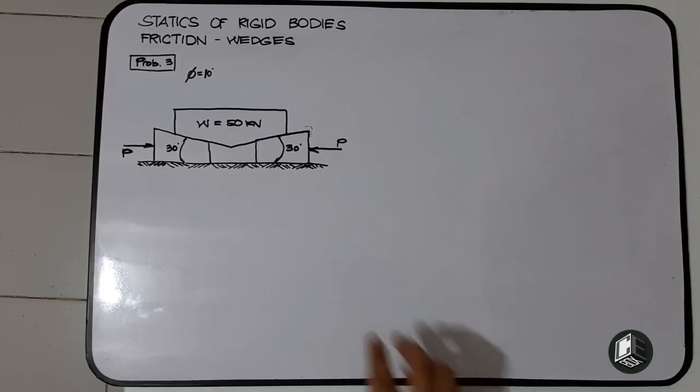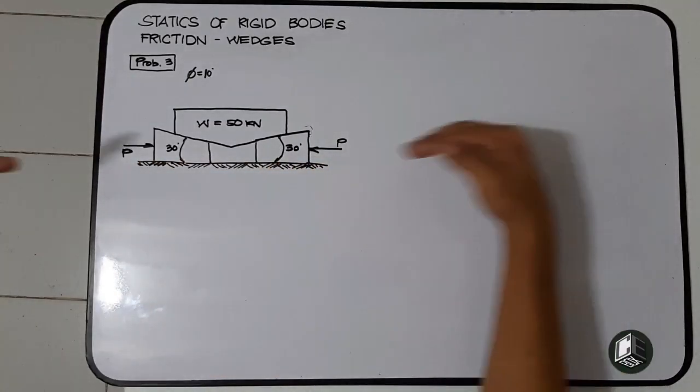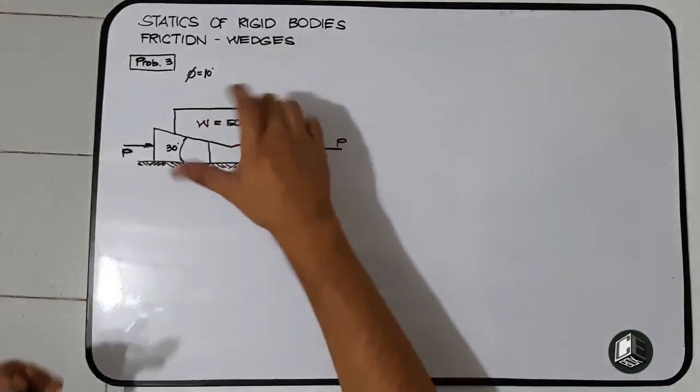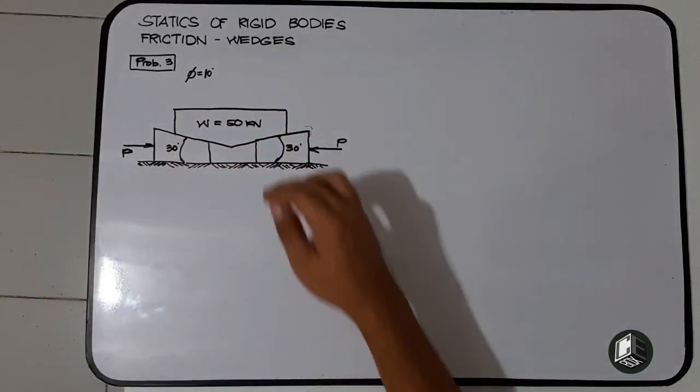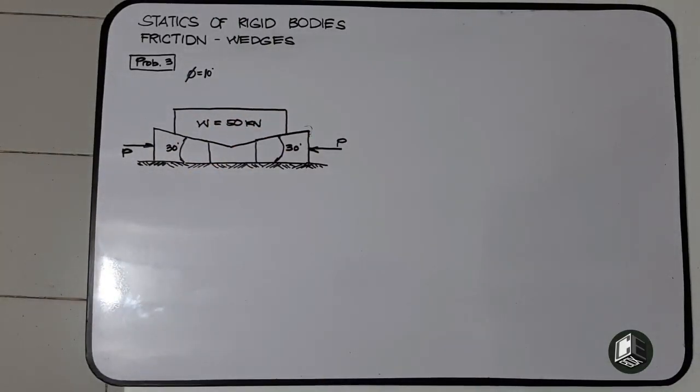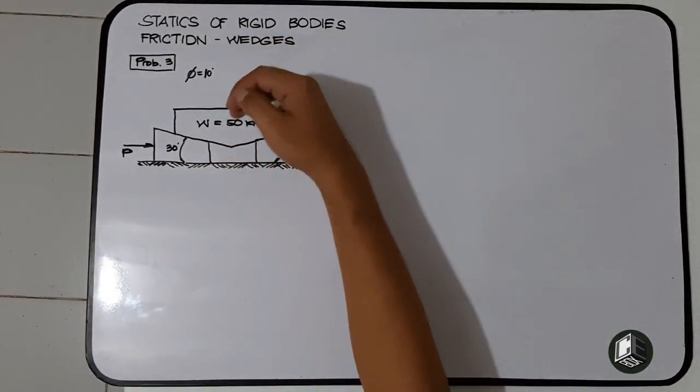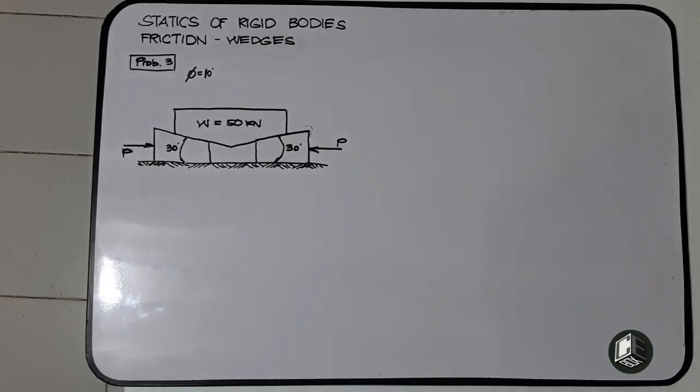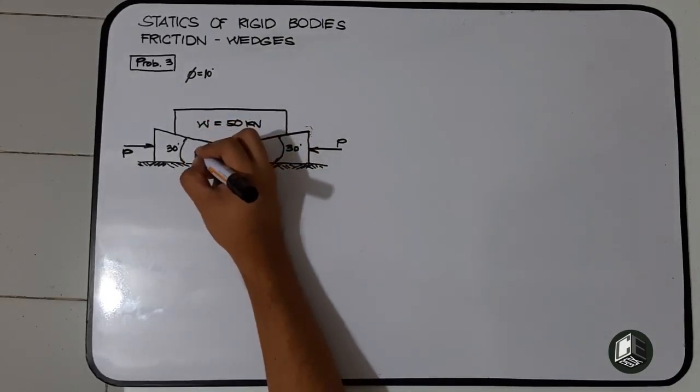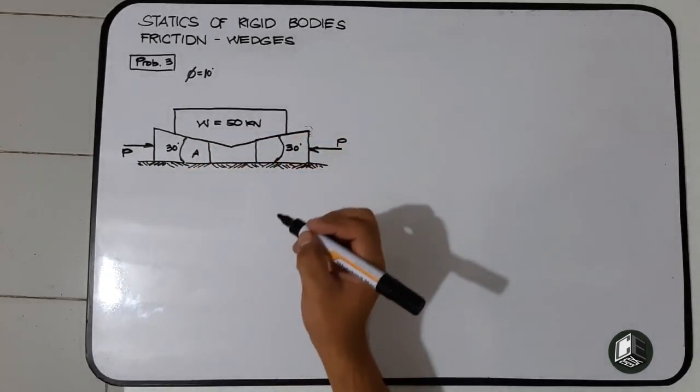We need to find the force P to start movement of our block. The block on top is weighing 50 kN. Let's call this block 1 or block A.